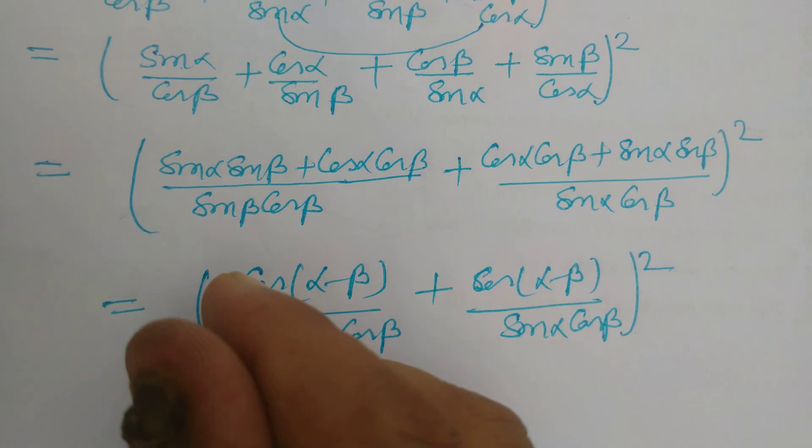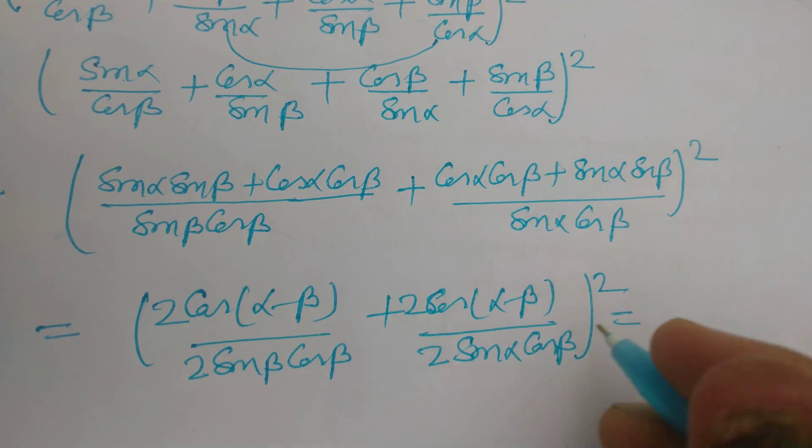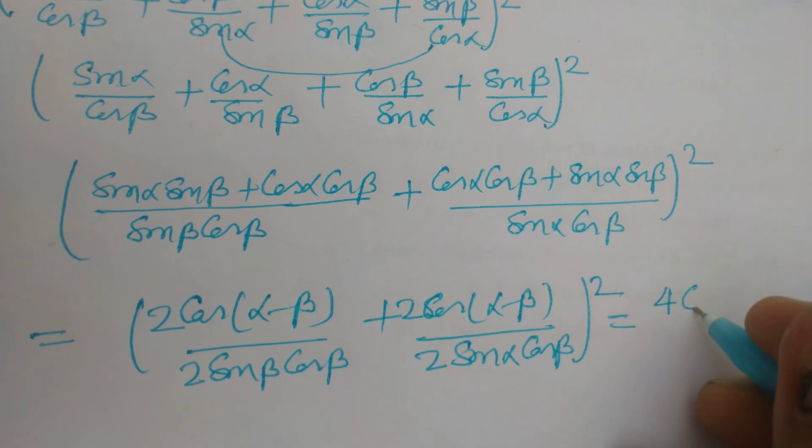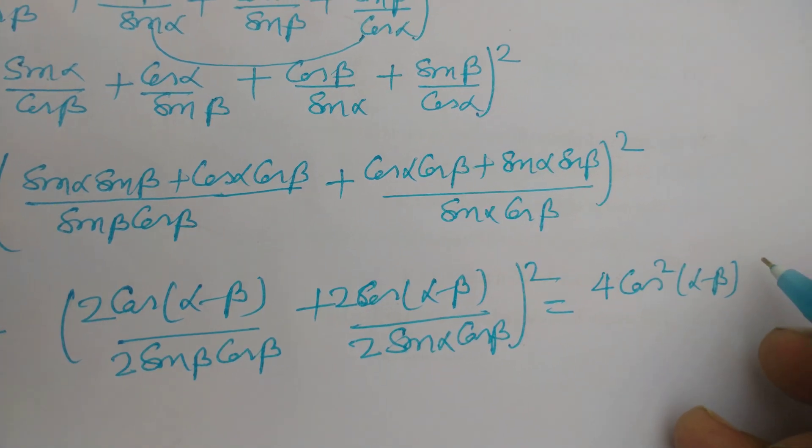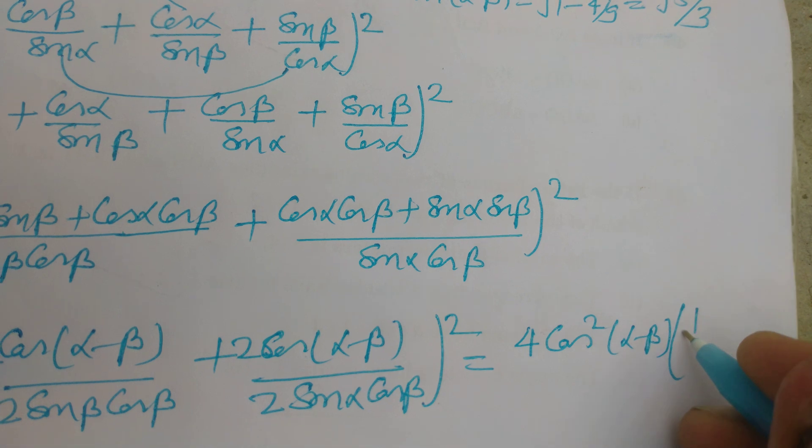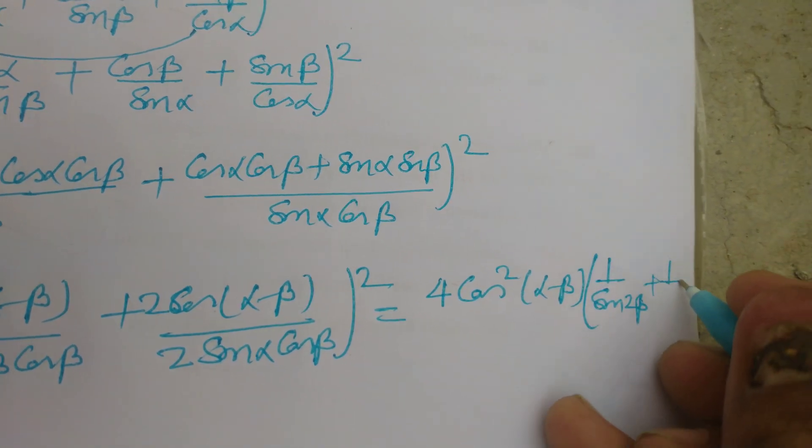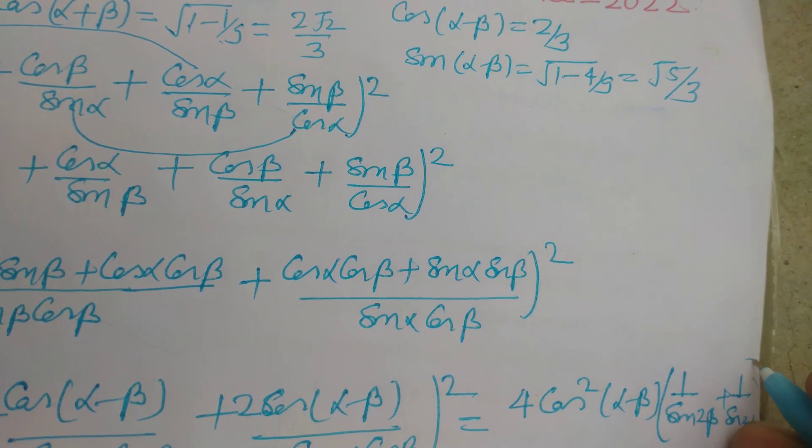Now we multiply this by 2, this also by 2, this also by 2, this also by 2. So this comes out from the bracket: 4 cos²(α-β) into [1/sin 2β + 1/sin 2α] whole squared.